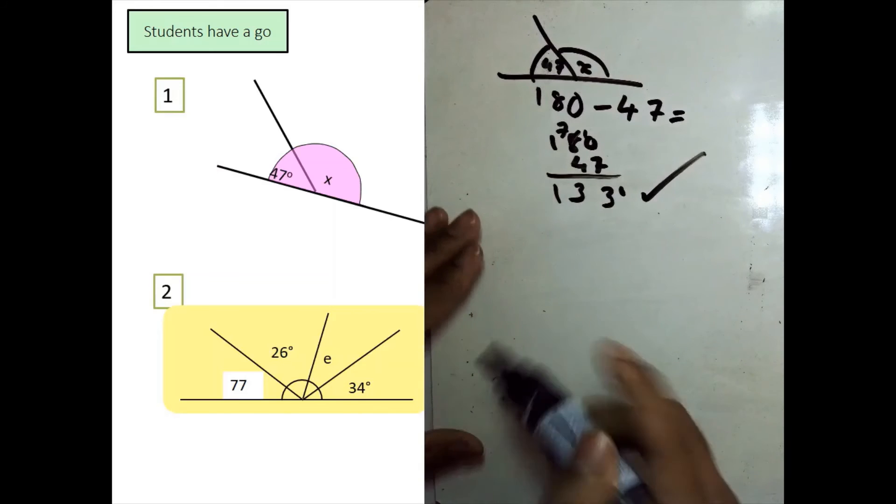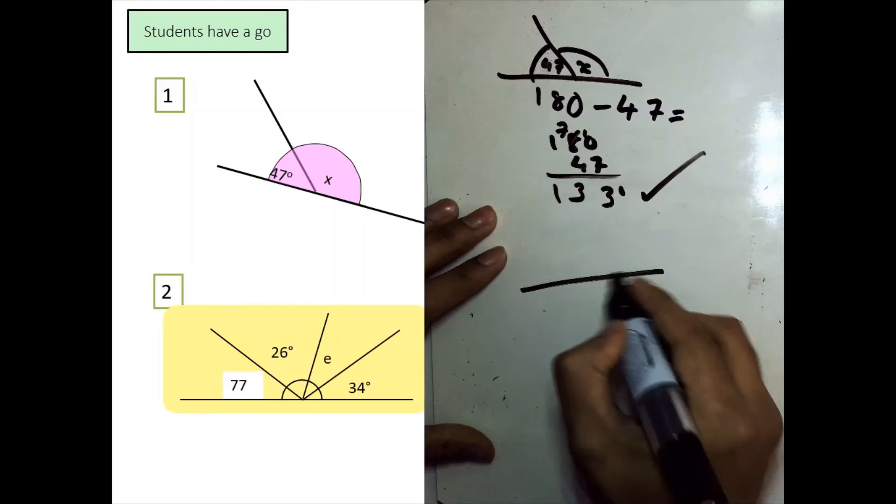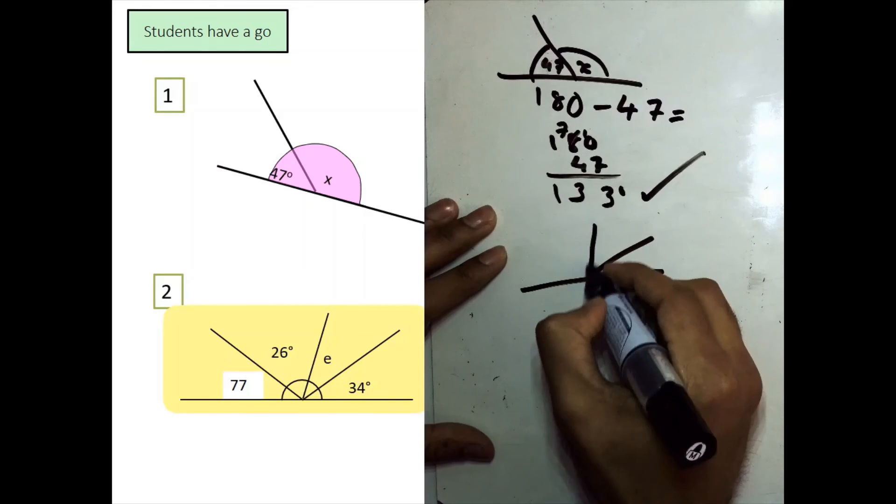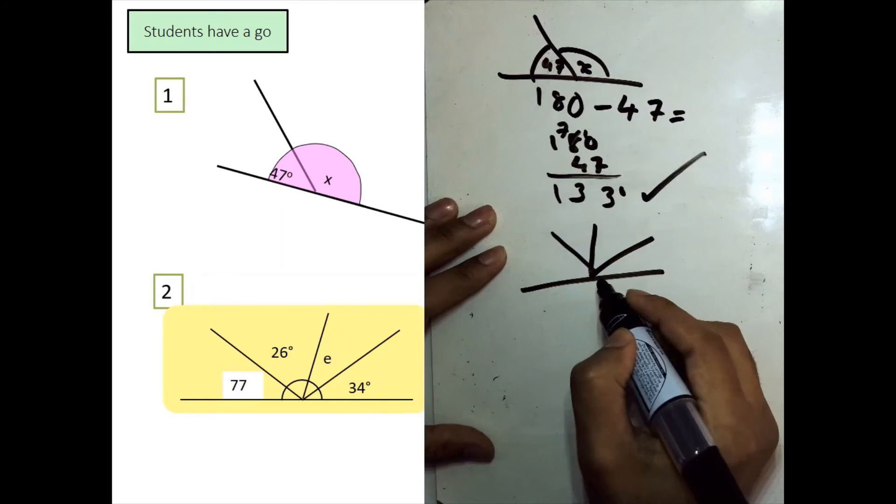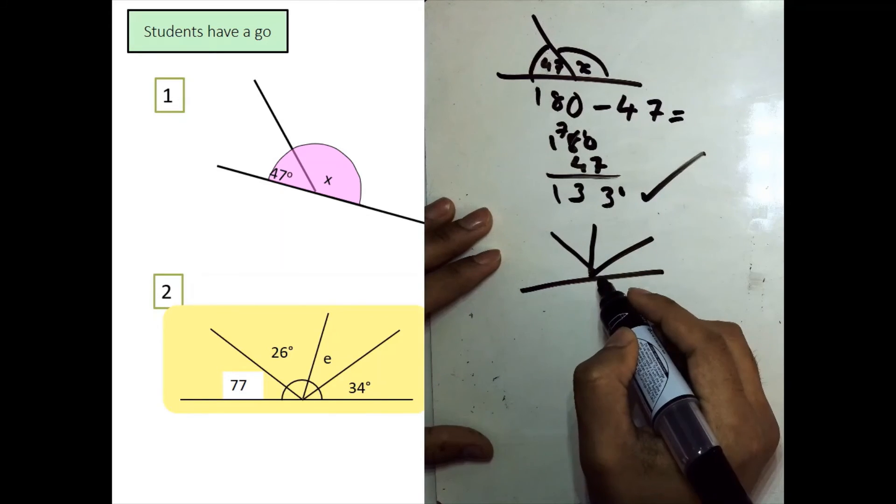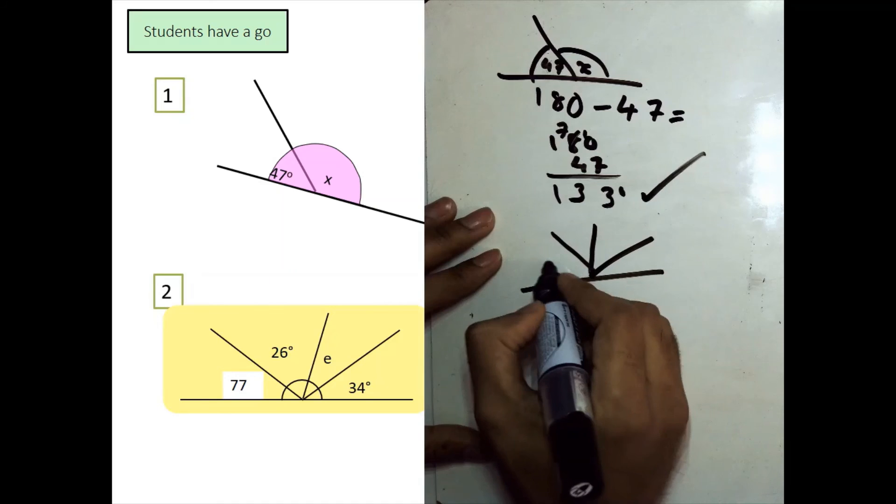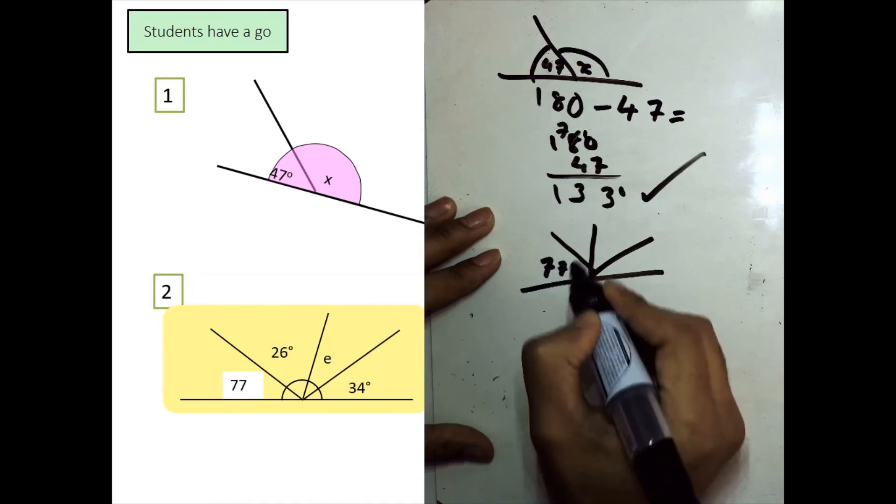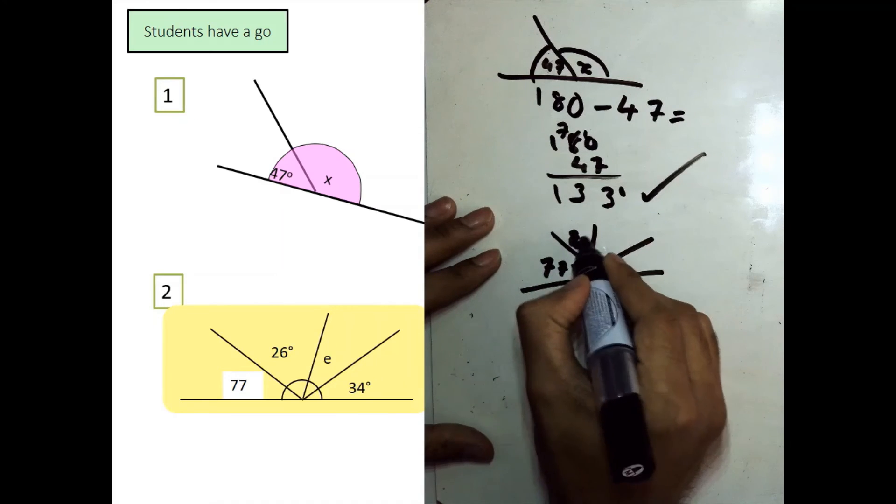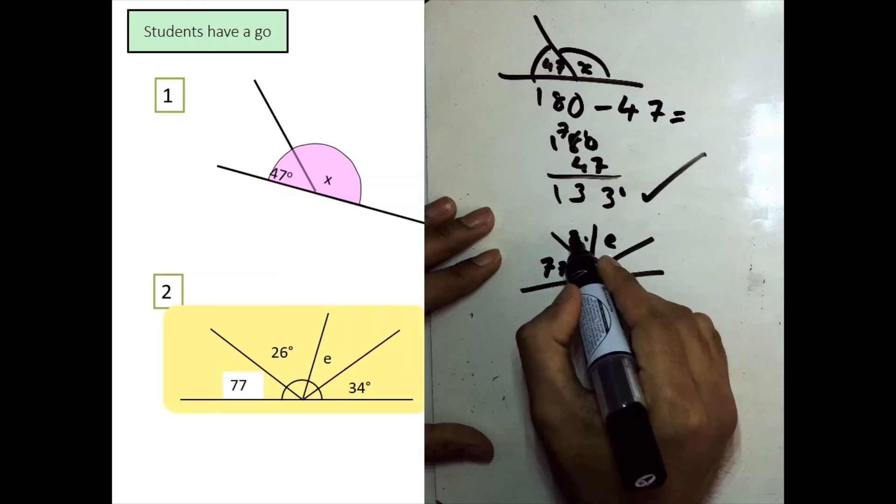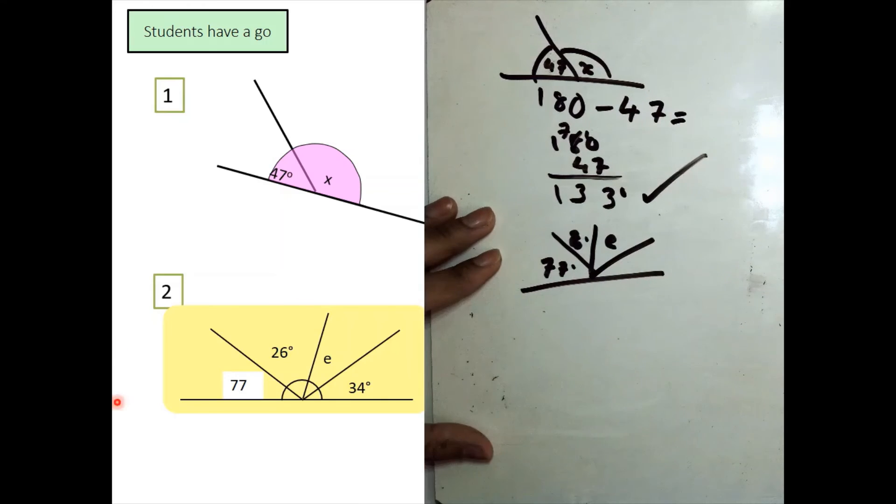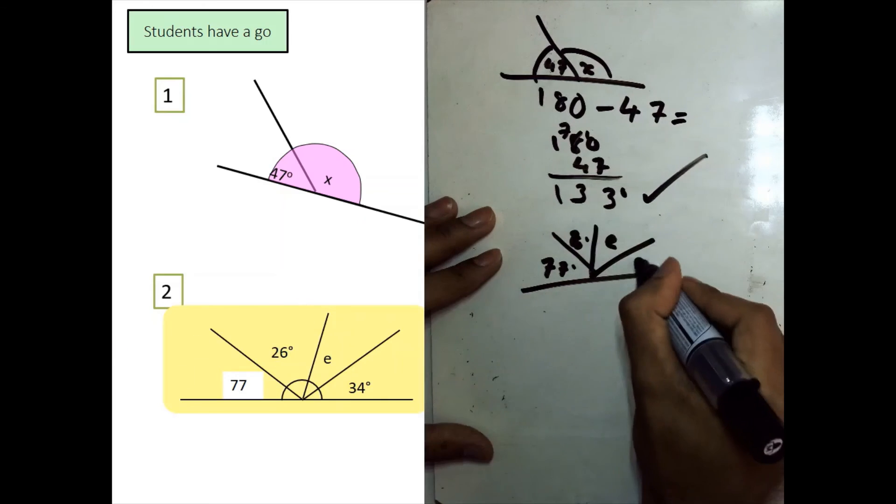So, this example over here is a fair bit trickier. But, you do have 4 given angles. Hopefully, you can see that we have 4 given angles. Now, with these 4 angles, you can understand that the method is still the same. We're not doing anything different. So, that's 77, that's a really bad 26, but hopefully you can see that in this diagram here. And then that's 34 degrees.